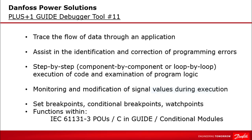On the overview slides I show the main points of the debugger tool, which has been presented in developer conference material 2017 and is described in the manual as well. The debugger tool is used to trace the flow of data through an application — by tracing the data flow you can detect, identify and correct programming errors. It allows step-by-step execution of code, monitoring and modifying signal values during execution, and examining program logic. You can strategically place breakpoints, conditional breakpoints and watchpoints in your application.